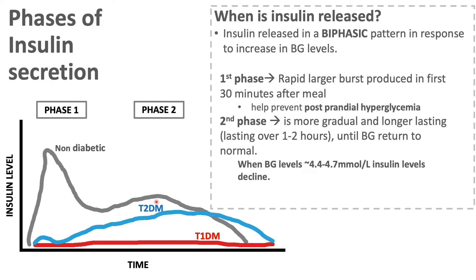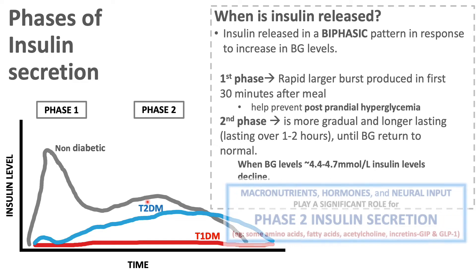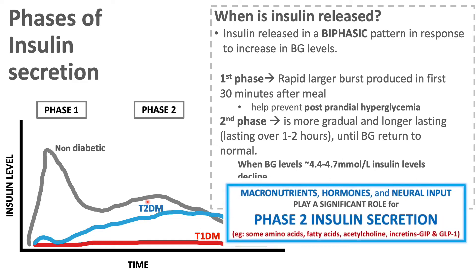With phase 2, macronutrients, neuronal input, and other hormones play a more significant role.